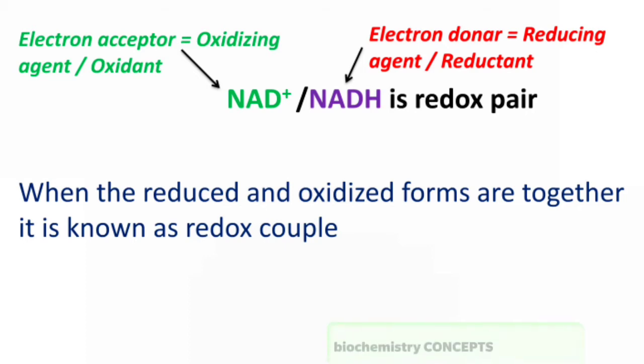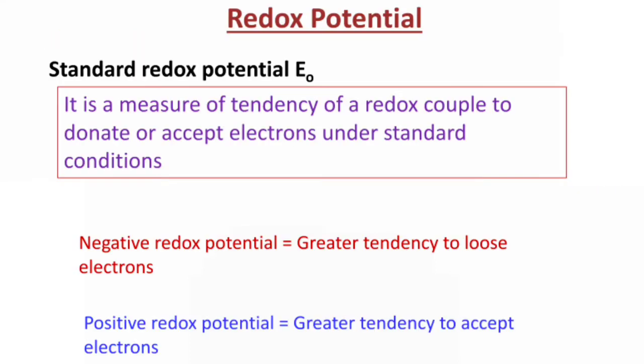Now, coming to Redox Potential. Redox pairs differ in their tendency to lose electrons. This tendency to lose electrons is called the Redox Potential. When this tendency to lose electrons is measured under standard conditions, then it is called Standard Redox Potential. This means you are providing the standard pH, standard temperature, everything. Under those standard conditions, this is called the Standard Redox Potential.